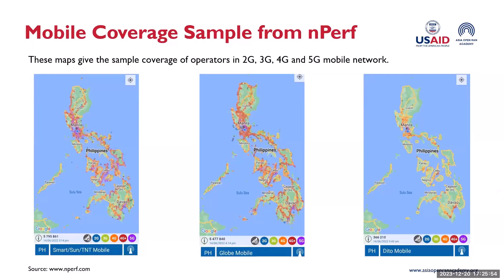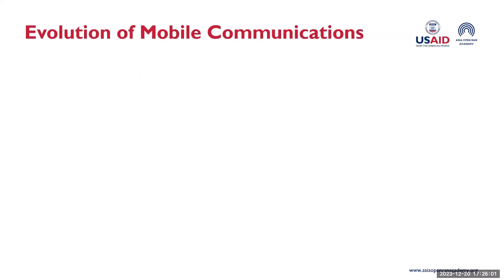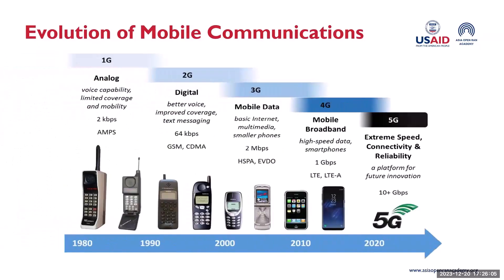Before going to 5G, let's discuss the evolution of mobile communication. In the 1980s the era began with 1G — an analog system that allowed basic voice communication, though coverage and mobility were limited and devices were bulky. The prominent technology was AMPS, the Advanced Mobile Phone System. This was followed by 2G, which introduced a digital revolution in mobile communications, improving voice quality, increasing coverage, and introducing text messaging capabilities.